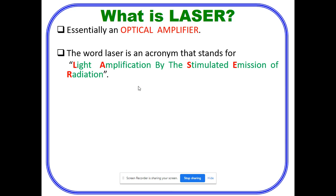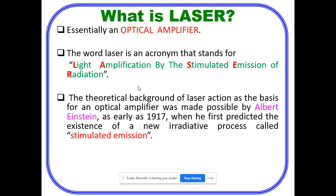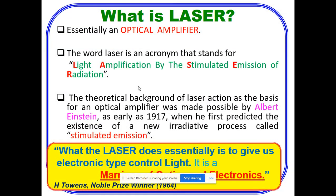So laser can be described as light amplification by the stimulated emission of radiation. The theoretical background of laser action is the basis for an optical amplifier and it was given by Einstein in 1917. He illustrated the new radiation process that is called stimulated emission. It is also said that the laser essentially gives us electronic type control and it is a marriage of optics and electronics treated by Townes who is a Nobel Prize winner in 1964.